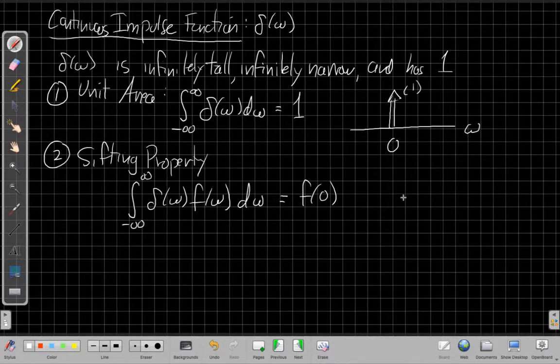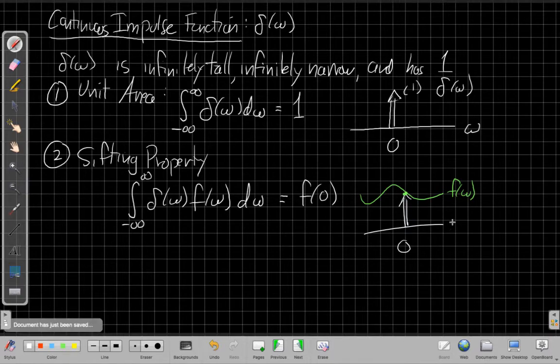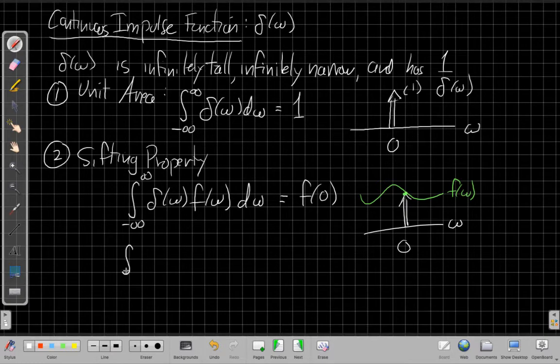And again, thinking about this thing that's infinitely big at the origin, that this is my delta of omega. And then maybe I have some other function going along, and it's scaling it. Well, at just this point, at this infinitely narrow point at the origin, the height gets f of omega times bigger. So instead of just having area one, the height just got scaled by f of omega. So this makes sense. But why we call it the sifting property is that in practice, we often end up using this with a shifted version of the impulse.